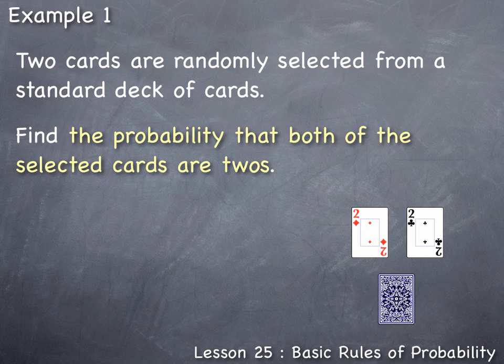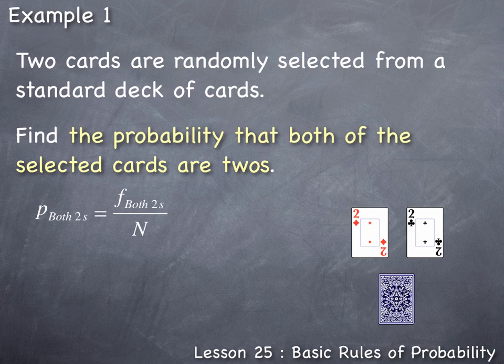Using the relative frequency approach, we need to count the number of ways both selected cards are twos. For instance: two of diamonds first and two of clubs second; two of hearts first and two of spades second; two of hearts and two of diamonds; two of clubs and two of spades; and so on. This starts to get pretty involved, so counting becomes much more difficult the more complex the problem is.